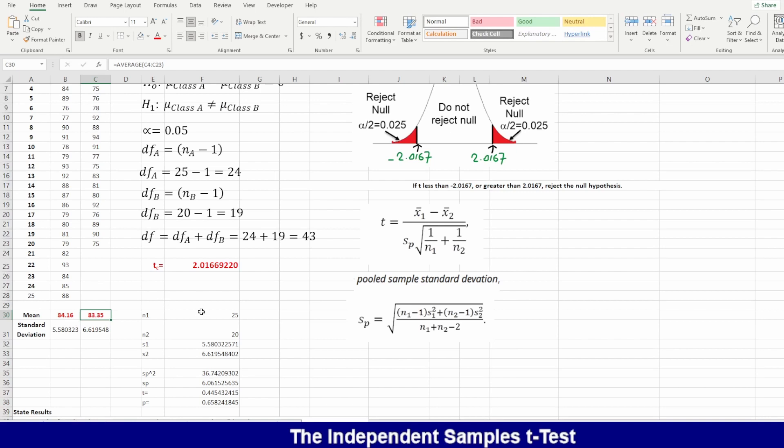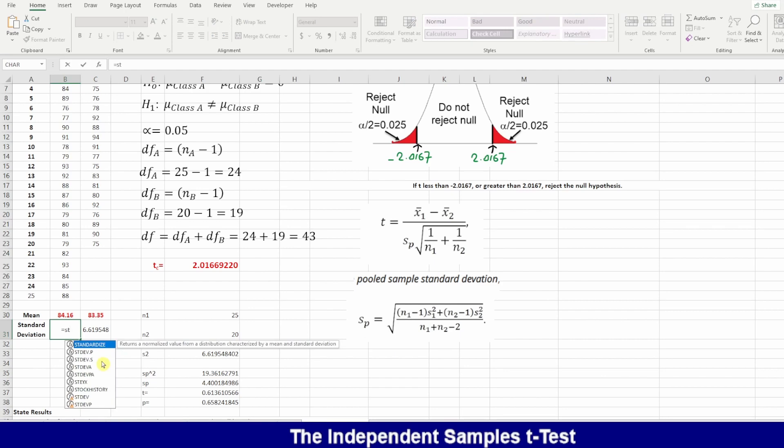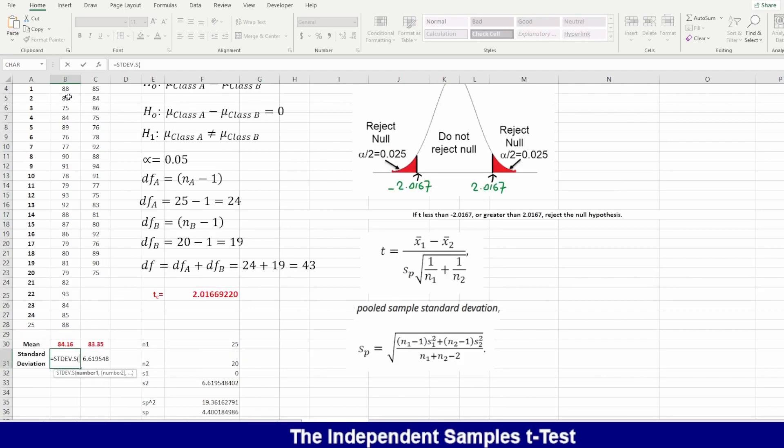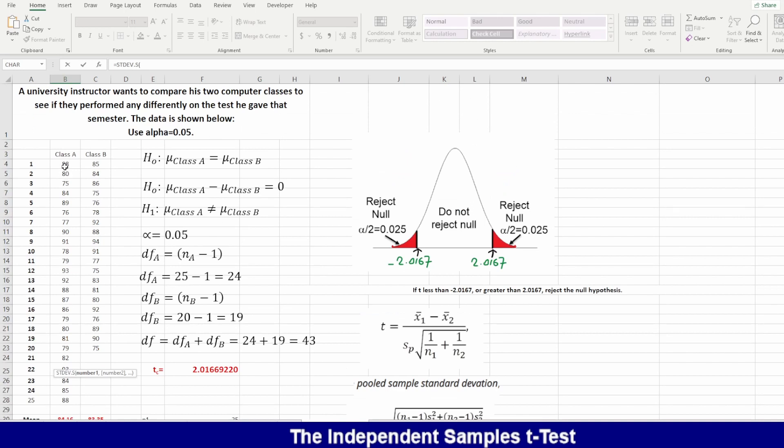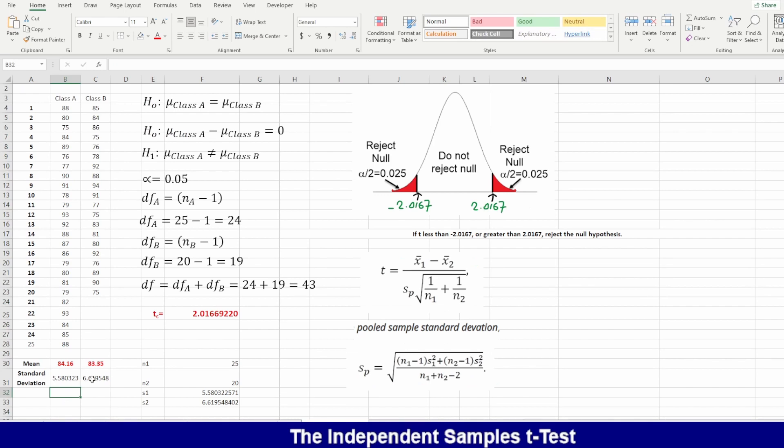For standard deviation, I will use the standard deviation for a sample. It will be equals to STDEV, and then I will select my data from here, and enter. And then I will do the same with class B. Now I have the mean and the standard deviation.